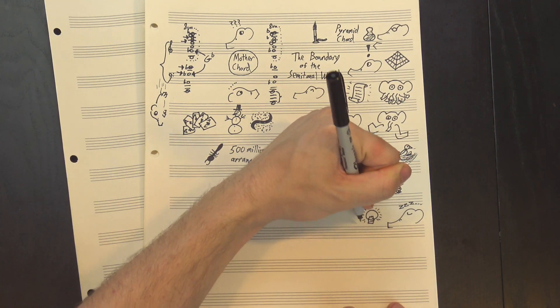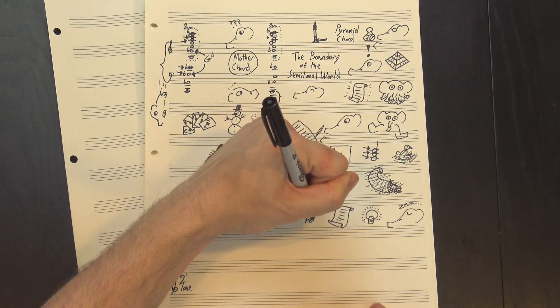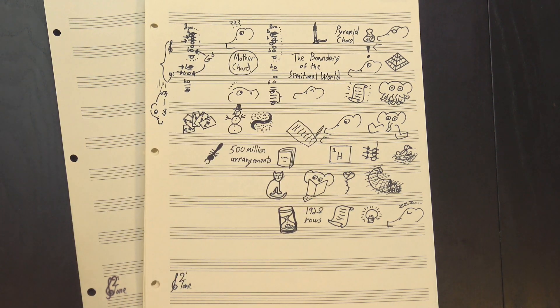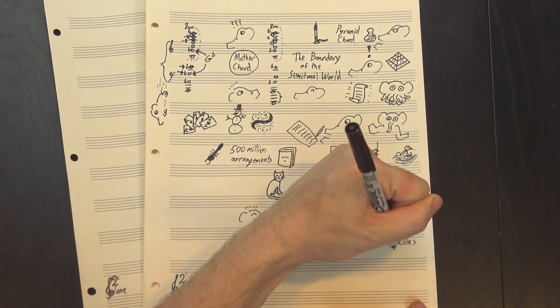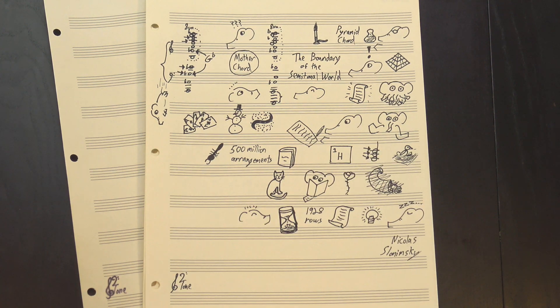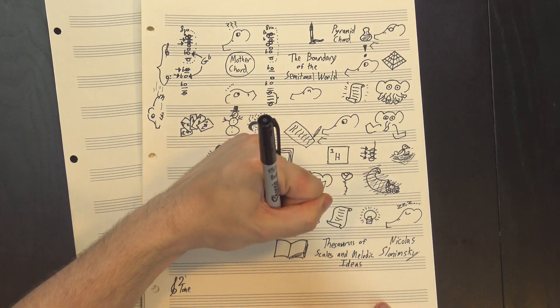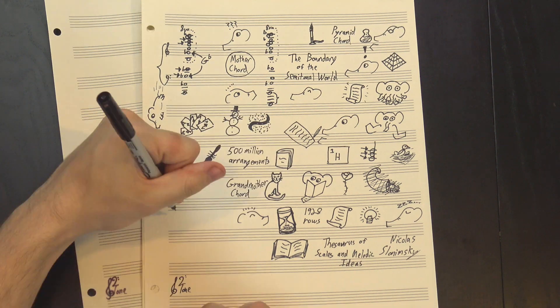Anyway, while it was the first solution to this problem, the mother chord isn't the only all-interval twelve-tone row. There are 1,928 total possibilities, although for the sake of time I won't go through them all. However, there are a couple standouts that have extra interesting properties, including one discovered by famed music theorist Nicolas Slonimsky. Slonimsky is probably best known as the author of the Thesaurus of Scales and Melodic Ideas, which is exactly what it sounds like. In it, he describes another all-interval row that he dubs the grandmother chord.